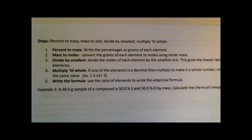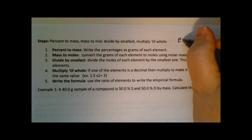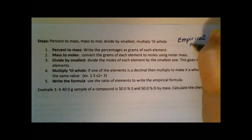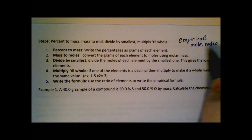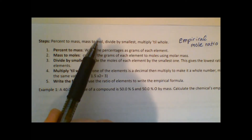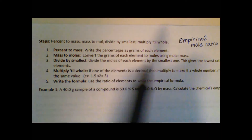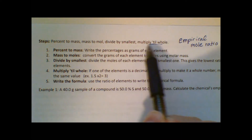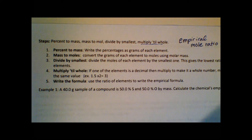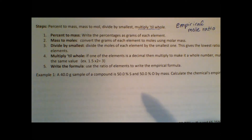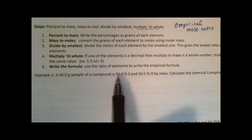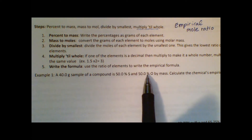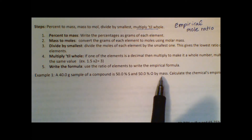Essentially we're finding the mole ratio of the different elements. To find a mole ratio, we convert everything to moles, then divide by the smallest value. The last step — multiply to a whole — is not always necessary, but we'll see when it is. Our first example: we have a 40-gram sample of a compound that is 50% sulfur and 50% oxygen by mass. We want to calculate its empirical formula.